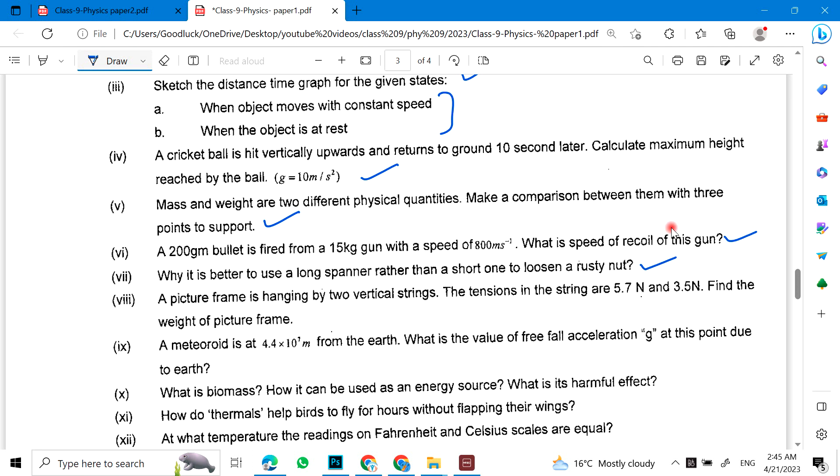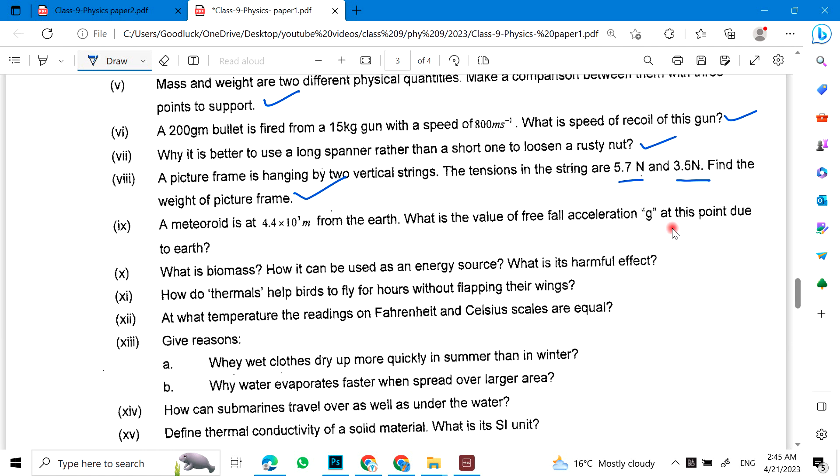A picture frame is hanging by two vertical strings. The tension in the string is 5.7 N and 5 N. Find the weight of the picture. Or, a meteorite is at 4.4 × 10^7 m from the earth. What is the value of free fall acceleration g at this point due to earth?